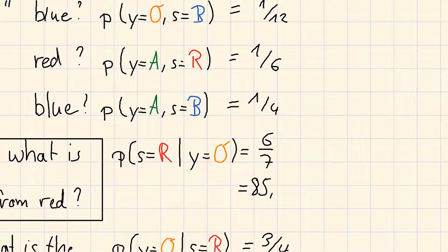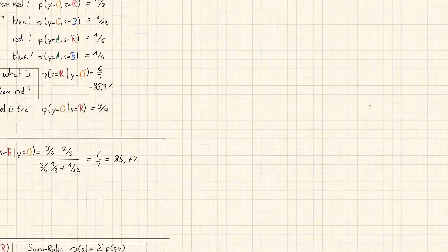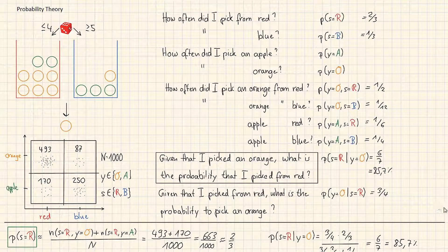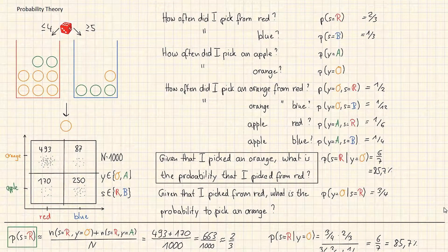If I do the experiment and I don't show you any fruit, your best guess would be that I have picked a fruit from the red box. But if the only information you get would be which fruit I picked, and let's now assume it would be an apple, and I would then ask you to guess from which box it came from.